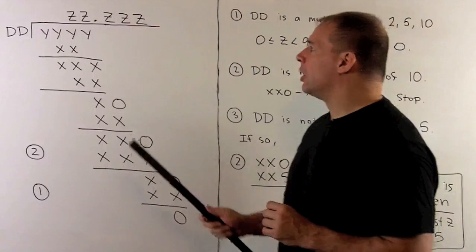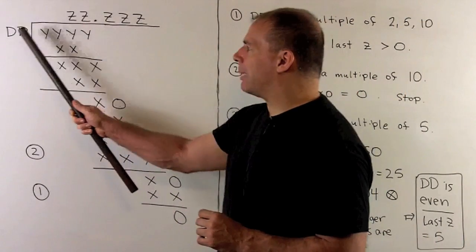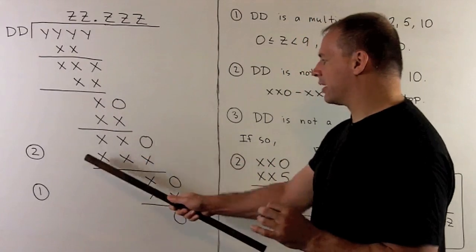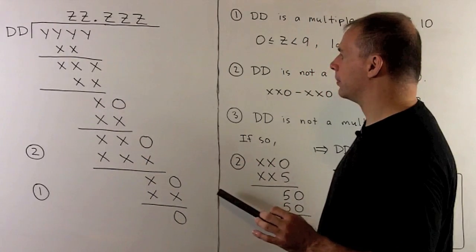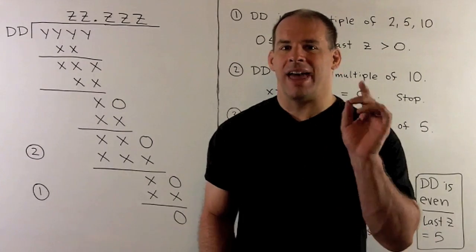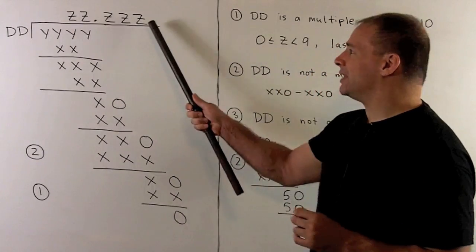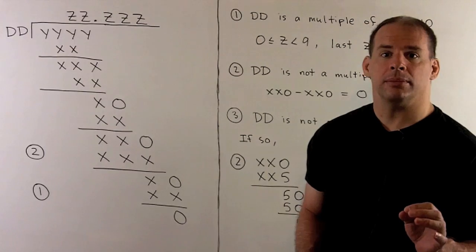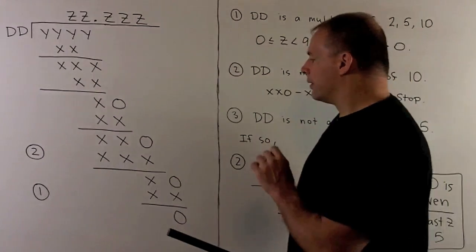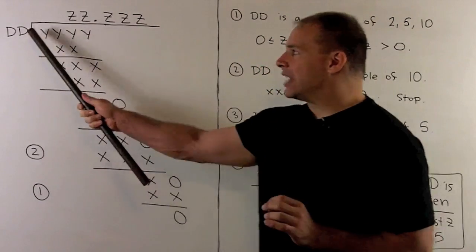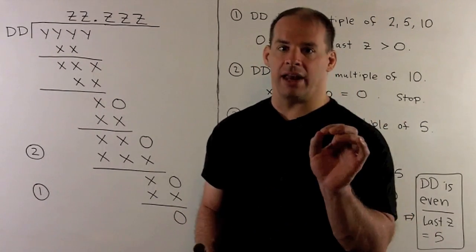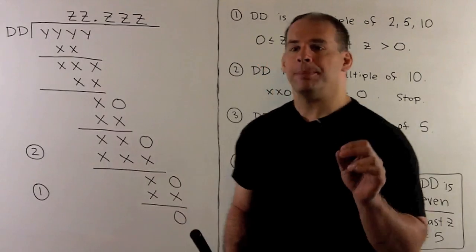Recall how long division works: we take each digit in the quotient, multiply by the divisor, and that gives us the integer on each second row. Our first step is to show that the divisor is even and that our last digit Z is equal to 5. To begin, I want to assert that the divisor has to be a multiple of 2, 5, or 10.